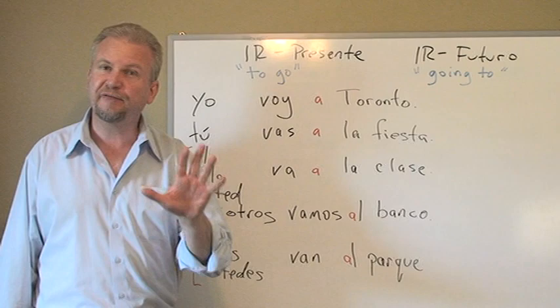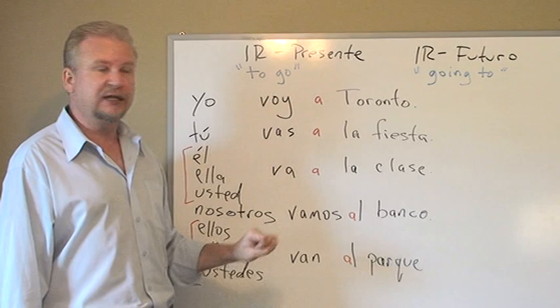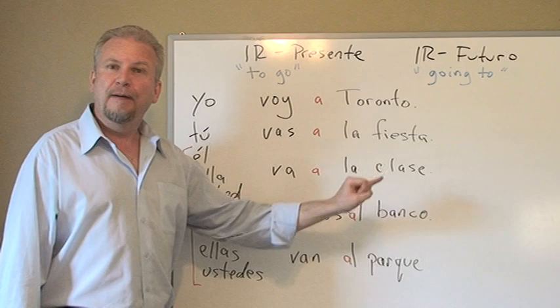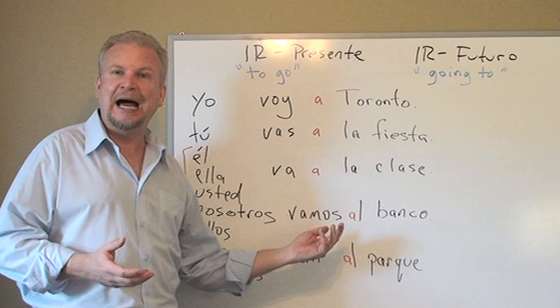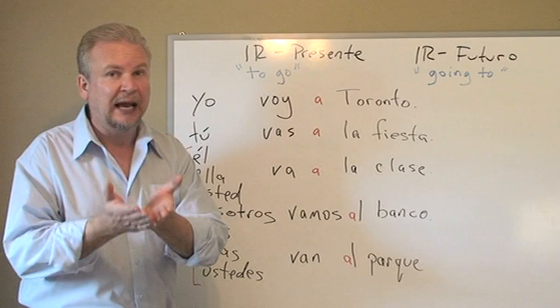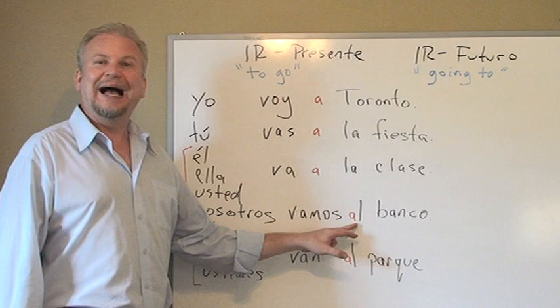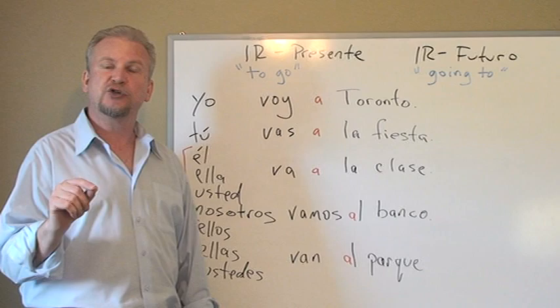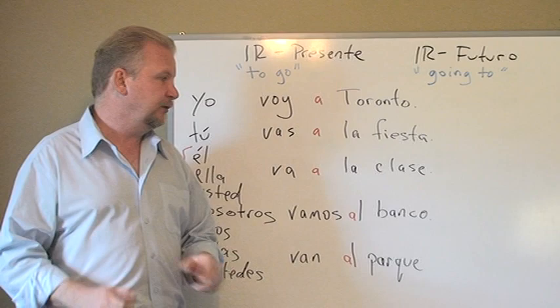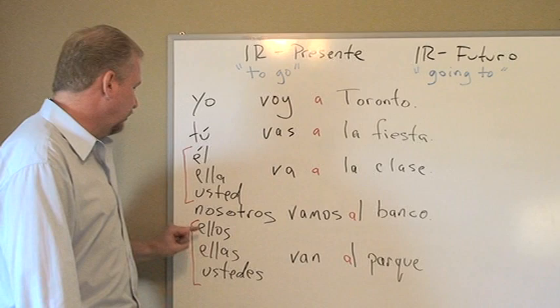Well, banco is masculine. Fiesta and clase are feminine, so we say 'a la fiesta' and 'a la clase.' For the bank, it would be 'a el banco,' but in Spanish they don't want you to say 'a el.' So they write a little contraction. Instead of saying 'a el banco,' they write 'al banco.' Al is the contraction used in Spanish when you have 'a' plus 'el' — meaning 'to the' when it's a masculine word, like banco. Al banco.